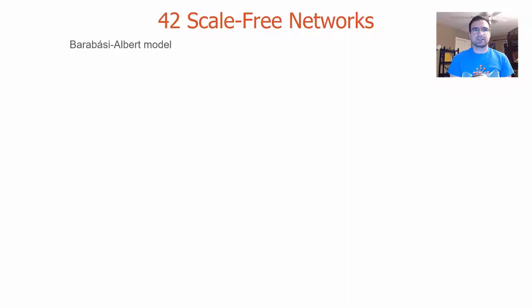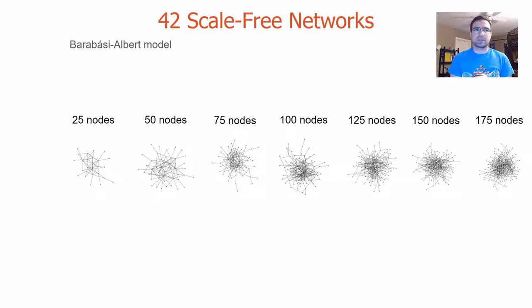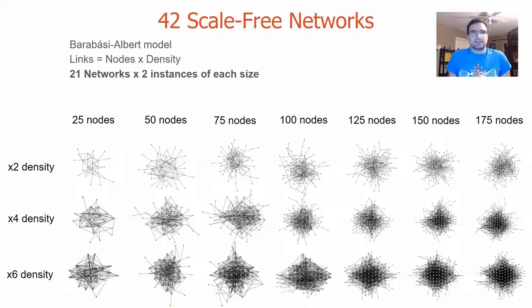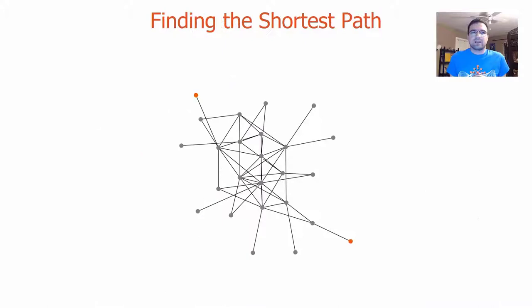We generated scale-free networks of varying sizes, starting at 25 nodes up to 175 nodes in increments of 25 nodes. We used three densities, a factor of 2, 4 and 6, thus having 21 networks. We also generated two instances of each network, resulting in a total of 42 networks. The diagrams were created using the force-directed layout of Webcola. All the drawings were displayed in the same size for all participants and trials. The participants were not allowed to zoom in or interact with the diagrams.